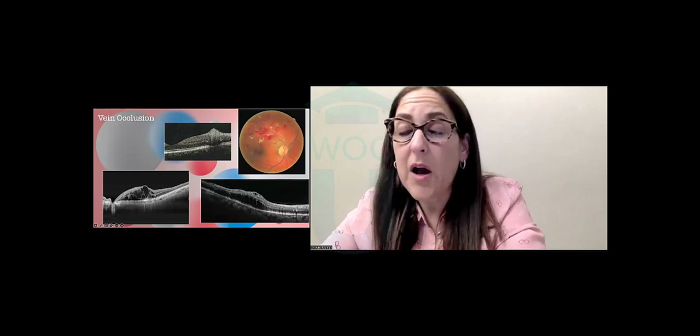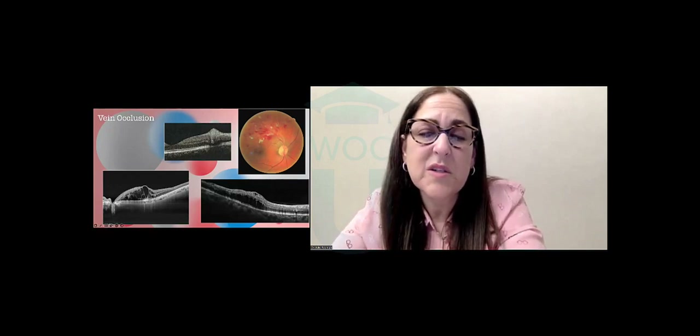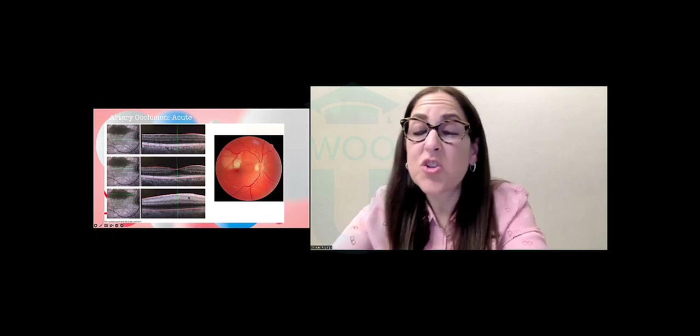In vein occlusions, we're going to get lots of different types of hemorrhages with cotton wool spots. On OCT, a really big cotton wool spot is very superficial — hyperreflective areas living above the level of the retina. Remember that cotton wool spots live in the nerve fiber layer. And here is macular edema in a patient with a vein occlusion, which looks very similar to our diabetic cases.